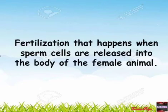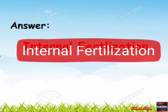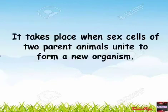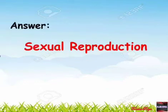It is the fertilization that happens when sperm cells are released into the body of a female animal — the answer is internal fertilization. It takes place when sex cells of two parent animals unite to form a new organism — the answer is sexual reproduction.